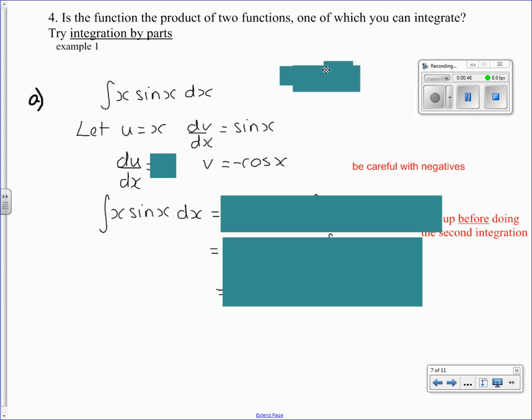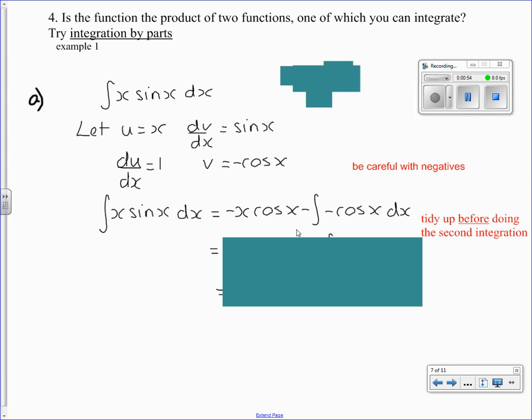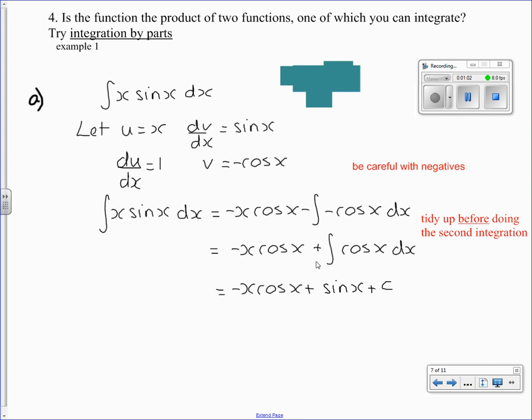You can then substitute into the formula that's in your formula book. Take care to tidy up before you do the second integration. You're subtracting a negative, that's the same as adding positive integral of cos x.